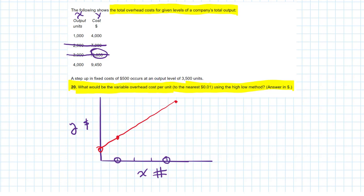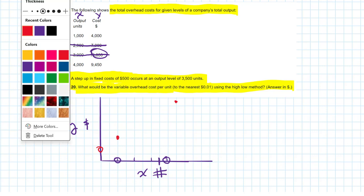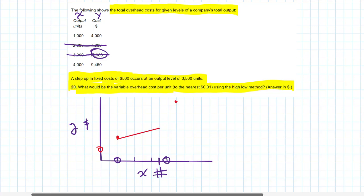However, we've got to read the story. A step up of $500 occurs at an output level of 3,500 units. So what's happening there? We can graph that. So 3,500 would be there. And this is not to perfect scale, but something like this is happening. We have one total cost to this point, and at 3,500, we've got a step. So the fixed cost goes up. Not to scale, but just to give you that idea. So this is what we have to deal with, the step.